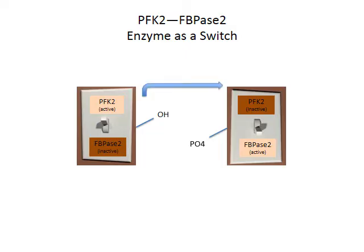To move from the OH orientation to the PO4 orientation — to flip the switch — we need an enzyme that can add a PO4 group to the OH group. We have such a thing: it's cyclic AMP-dependent PKA, which we've used before.